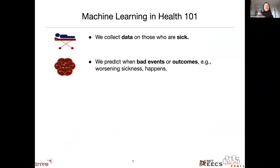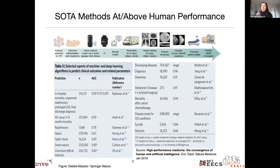Machine learning and health 101: we collect data on those who are sick — hospital records or clinical trials — and then we predict when a bad event or outcome like worsening sickness is going to happen. That's worked really well. We have state-of-the-art methods that perform at or above humans across the range of the human lifespan. Every one of these lines is a paper where somebody did exactly that.